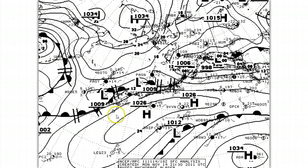The barometric pressure decreases as you go outside this high pressure system. Over here is a low pressure system with a central pressure of 998 millibars. The pressure increases as we move away from the center of the low pressure system toward the high pressure system.